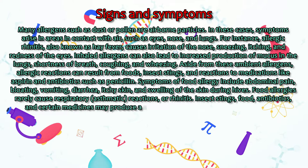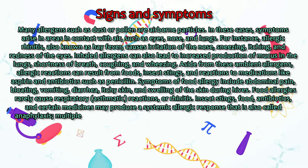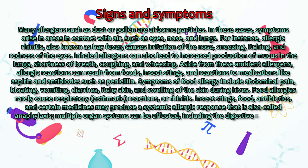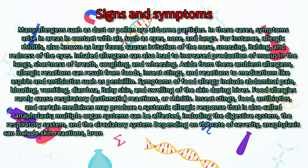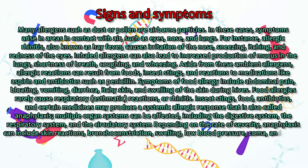Insect stings, food, antibiotics, and certain medicines may produce a systemic allergic response also called anaphylaxis. Multiple organ systems can be affected, including the digestive system, the respiratory system, and the circulatory system. Depending on the rate of severity, anaphylaxis can include skin reactions, bronchoconstriction, swelling, low blood pressure, coma, and death.